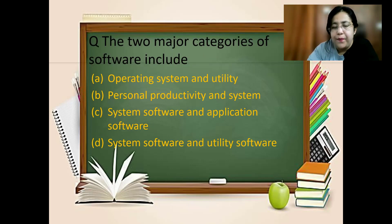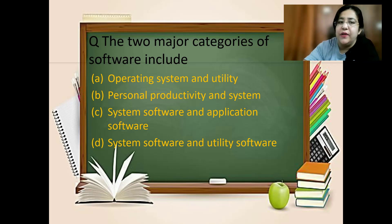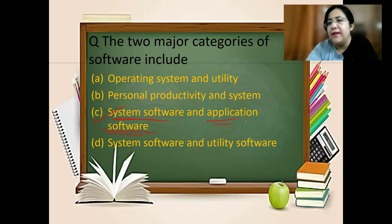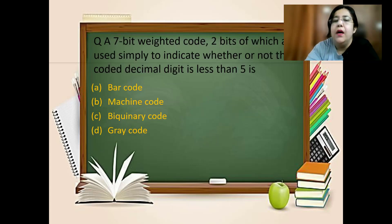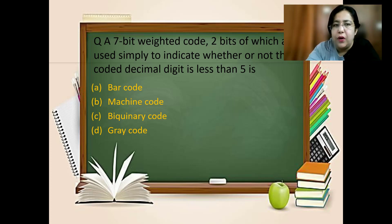Next question: the two major categories of software include system software and application software. The operating system comes under the category of system software. Other softwares like PowerPoint, Excel, and Paint are application softwares.